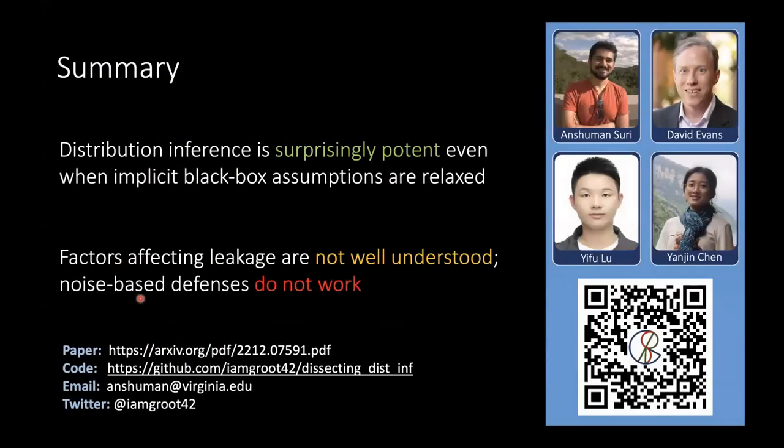Any takeaways I would like the audience to have today is that distribution inference is surprisingly important, even when these assumptions in the black box scenario are relaxed one by one. The factors that impact this inference risk are not very well understood. I think Valentin's Group made very good contributions in that, trying to link it with causality. But the important thing over here is that the defenses that usually end up giving some sense of protection in security and privacy don't end up working really well here. You can scan this QR code if you want to learn more about the work, and I'll be happy to chat with anyone about that. Thanks.